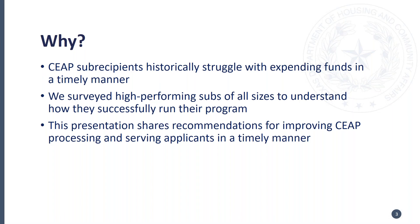One of the top complaints and the reason for calls to the department is that people are complaining about how long subrecipients take to process applications, or that they are unsure when they will get an answer on their application. So we surveyed the top performing subrecipients in the network of all sizes — small, medium, and large — to determine best practices to allow for timely processing and on-time expenditures of funds. The guidance shared here comes directly from data from the subs within your network, and best practices are shared to help you make improvements to your program. Ultimately, our goal is that you fully expend your CIAP funds within the terms of the contract.